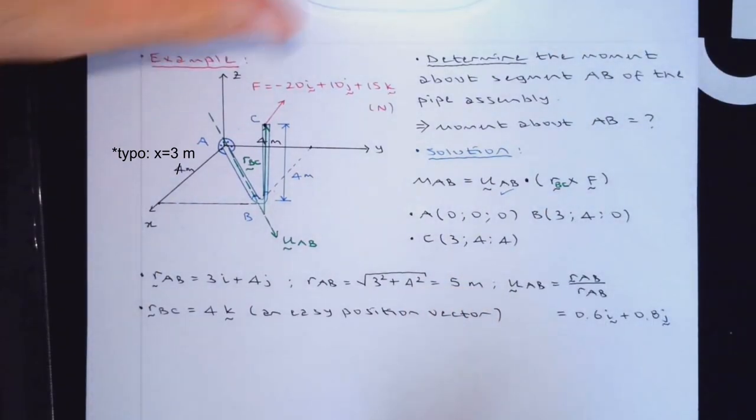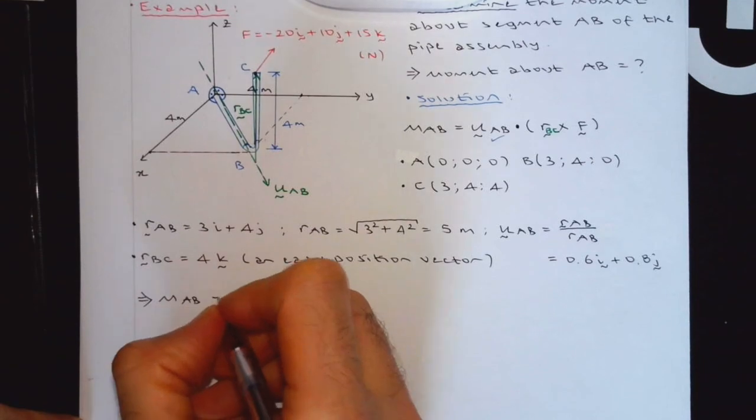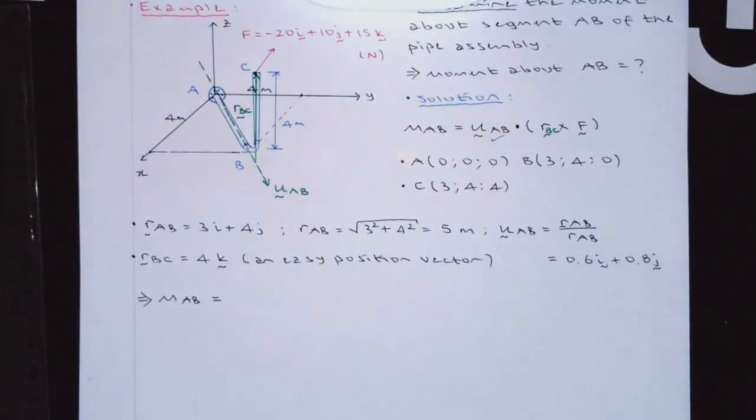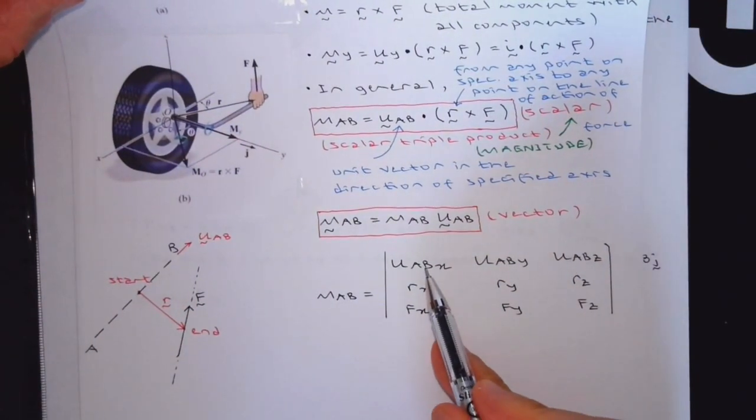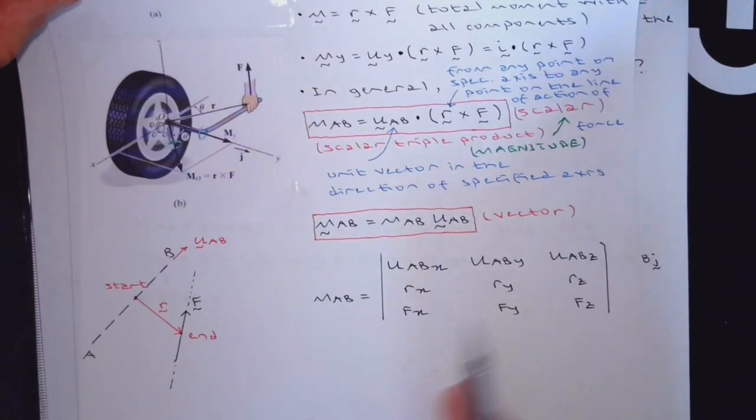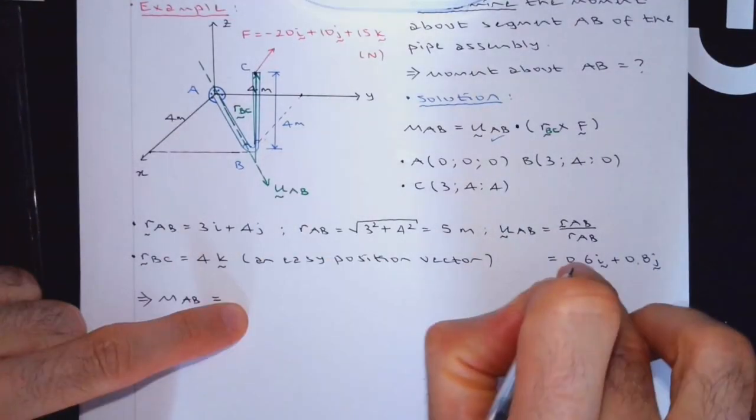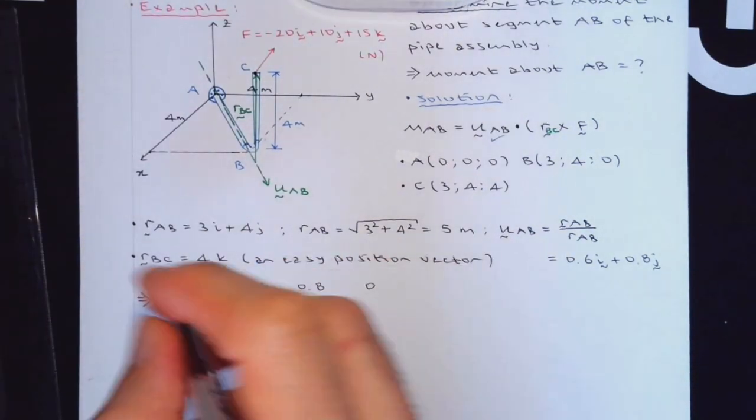I'm just going to do this in a determinant. This is going to be the answer. Mab. This is going to be the magnitude of it. Again, if you remember what I have written previously in this determinant, components of unit vector, x, y, z, position vector, and then F. So components of the unit vector is 0.6, 0.8, 0. Right. So it is done.